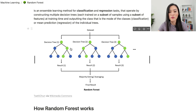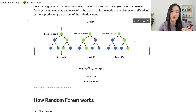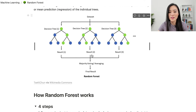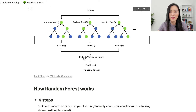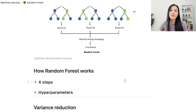Here is a diagram showing how it works. In this case there are three decision trees — one, two, and three. The random forest algorithm looks at the results of all these trees and then takes majority voting or averaging, and then outputs the final result. At a high level, that's how a random forest works.